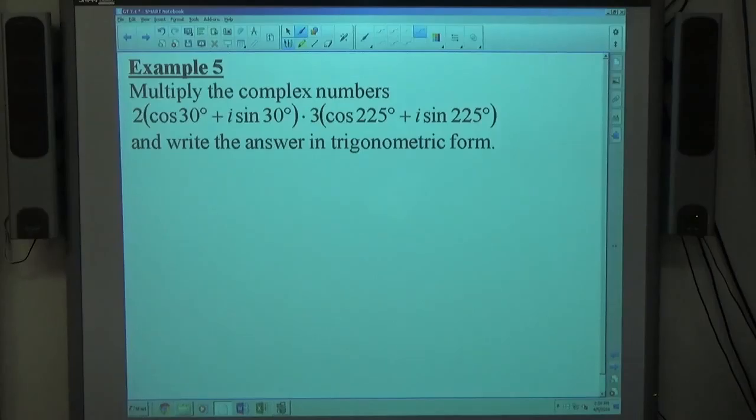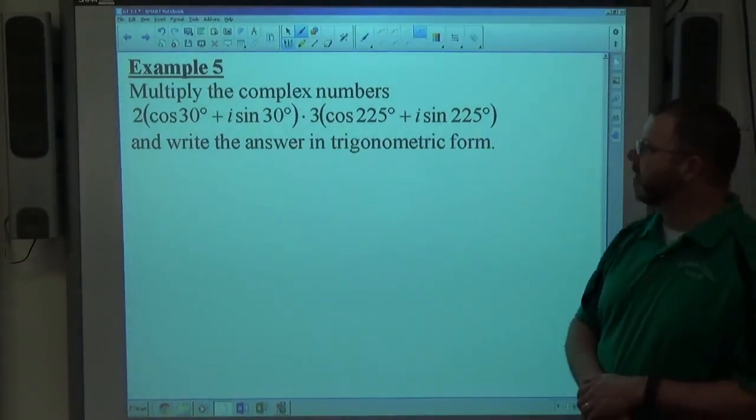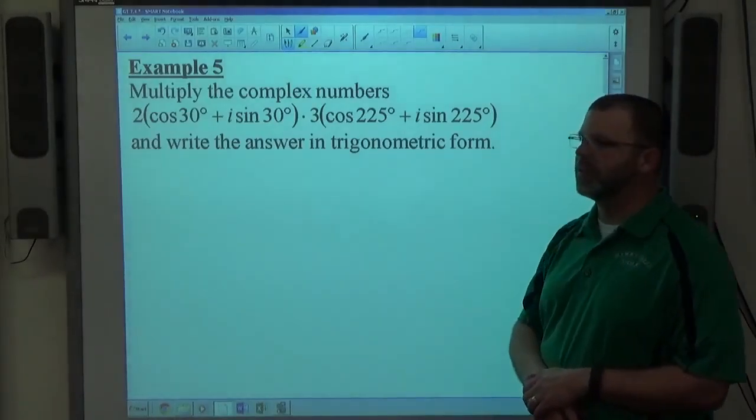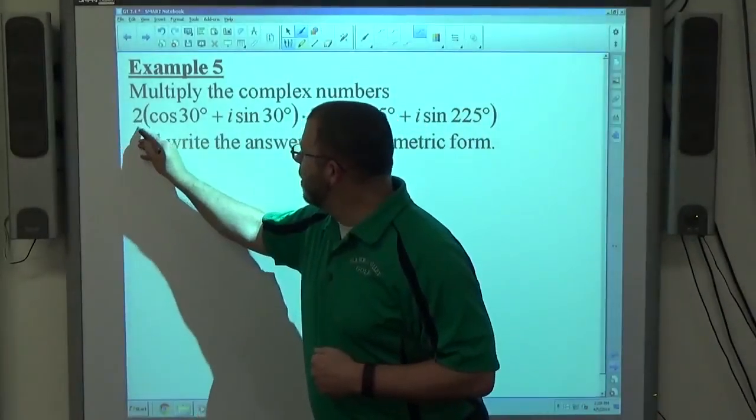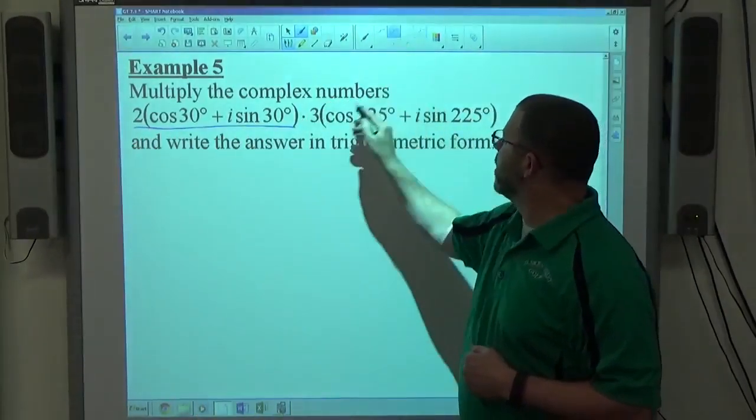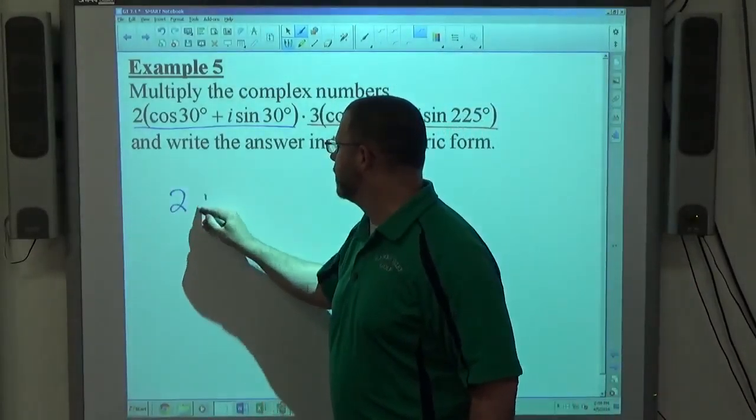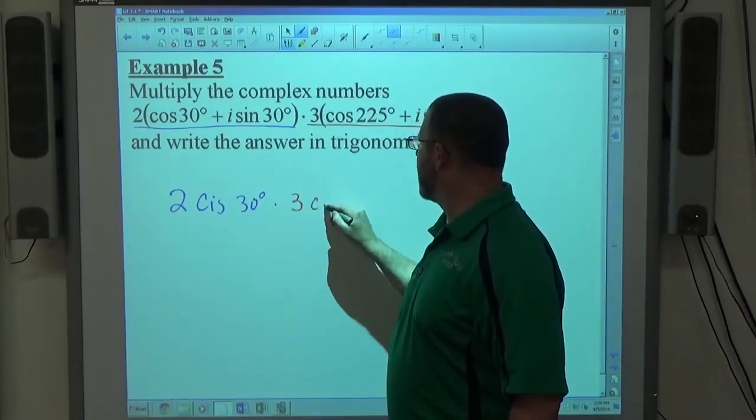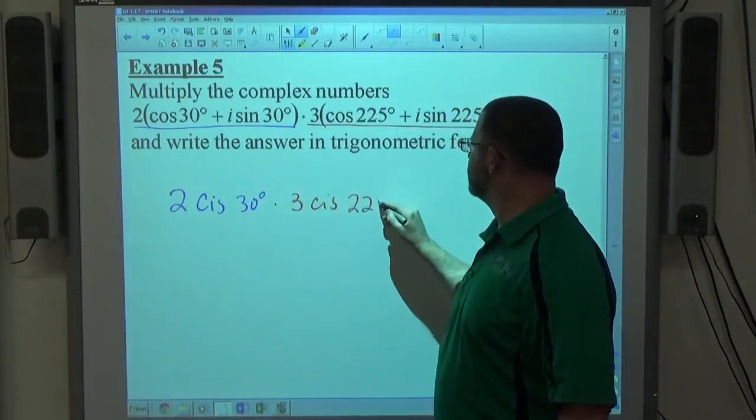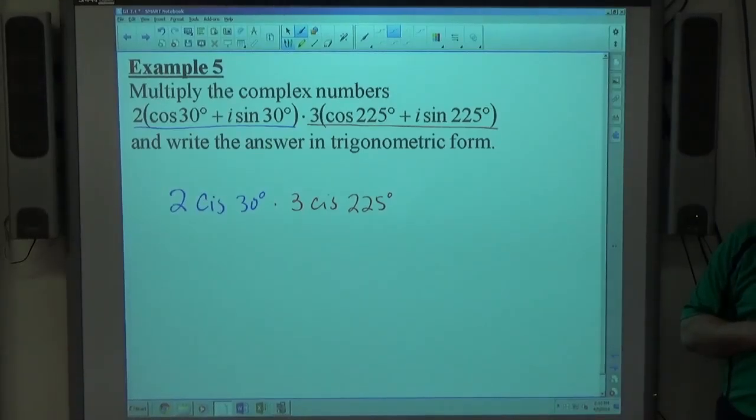Example 5. Multiply the complex numbers 2(cos 30° + i sin 30°) times 3(cos 225° + i sin 225°). This is the expanded form of the trigonometric structure. The first thing I personally would do is change it to 2 cis 30° times 3 cis 225°. Just for the sake of writing it, it's much more concise to write it that way. It makes it easier to look at.